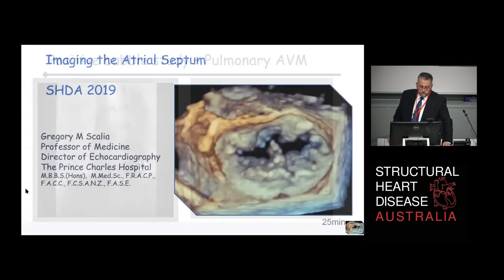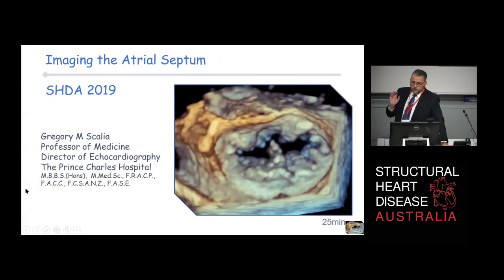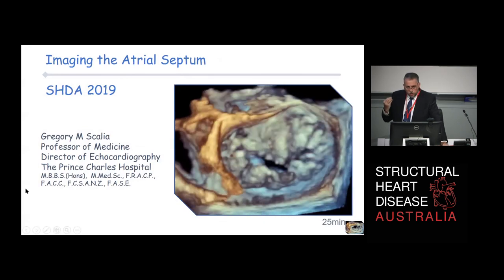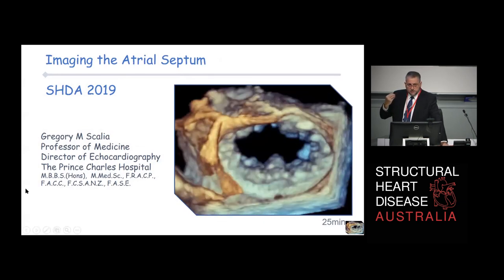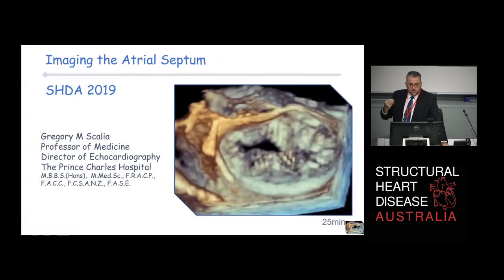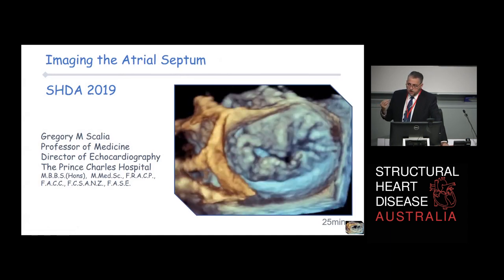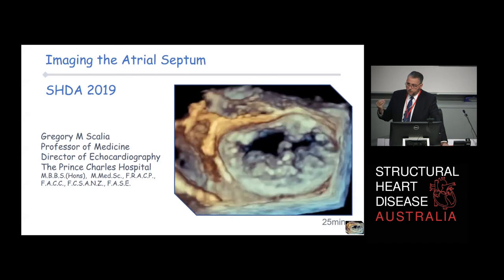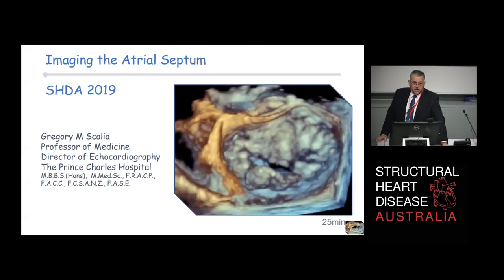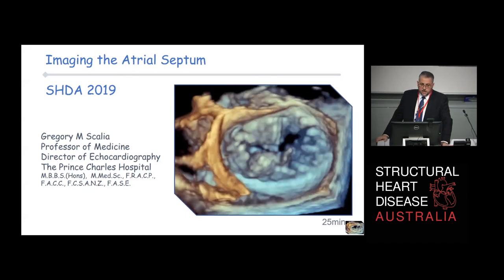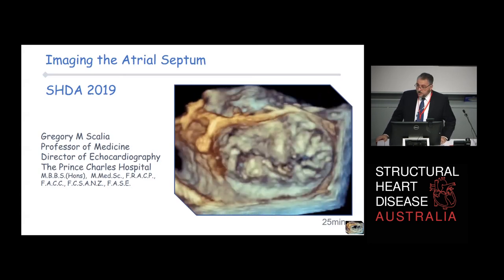To summarise: the atrial septum - think about where you're standing and where you're looking from when taking your imaging. Think about anterior and posterior. Think about the short axis of the aortic root, the non-coronary cusp, the right upper pulmonary vein, the cavel, and think about the associated anatomy that will allow you to do these procedures. Thanks very much.